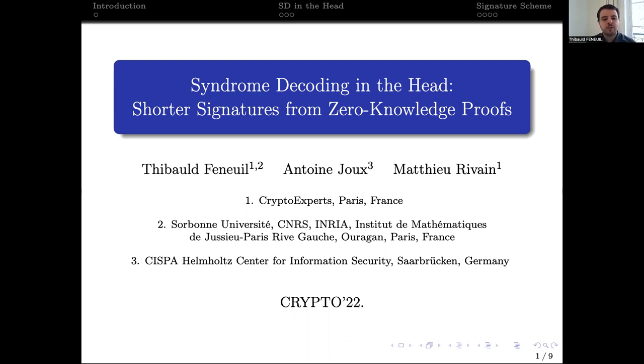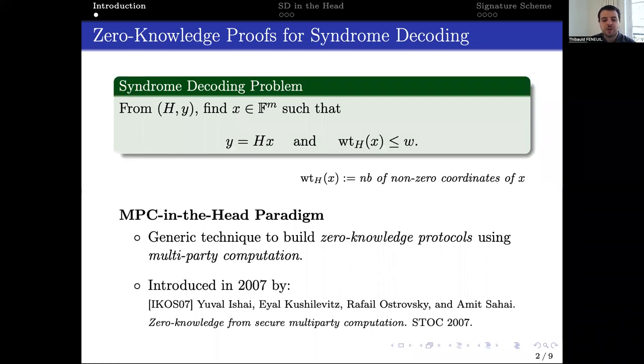In this work, we propose a new code-based signature scheme built from a zero-knowledge proof. To design this signature, we chose to focus on the syndrome decoding problem for which cryptanalysis is stable for many years.